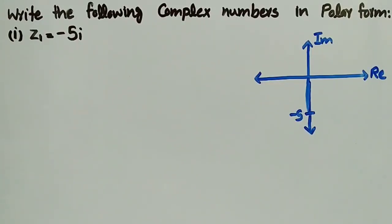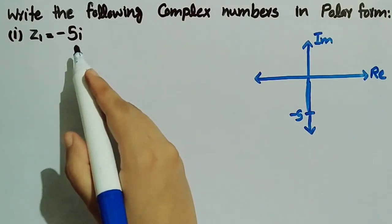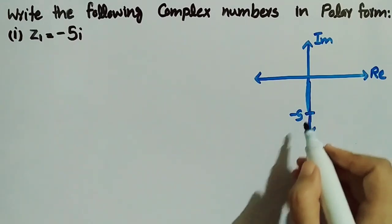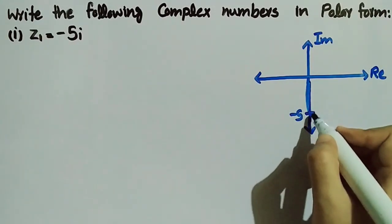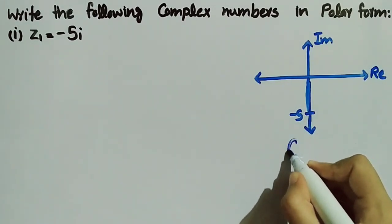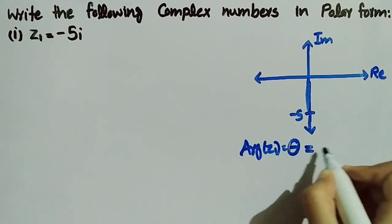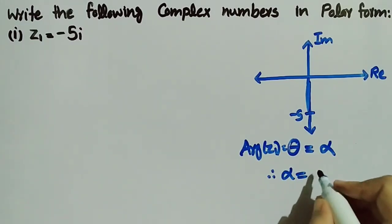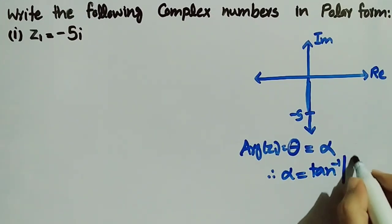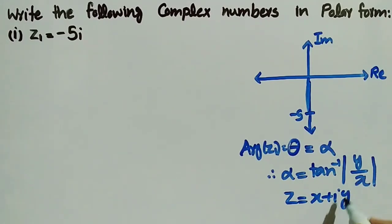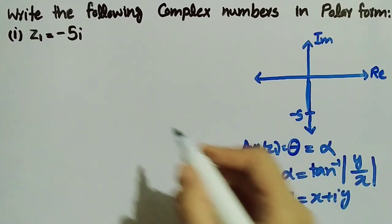In this video we will find the polar form of two complex numbers. The first one is z1 equal to minus 5 iota. In this complex number the real part is 0 and the imaginary part is equal to minus 5. Since the complex number is on the negative imaginary axis, the principal argument theta of z1 equals alpha, where alpha is tangent inverse of y over x for any complex number z = x + iy.